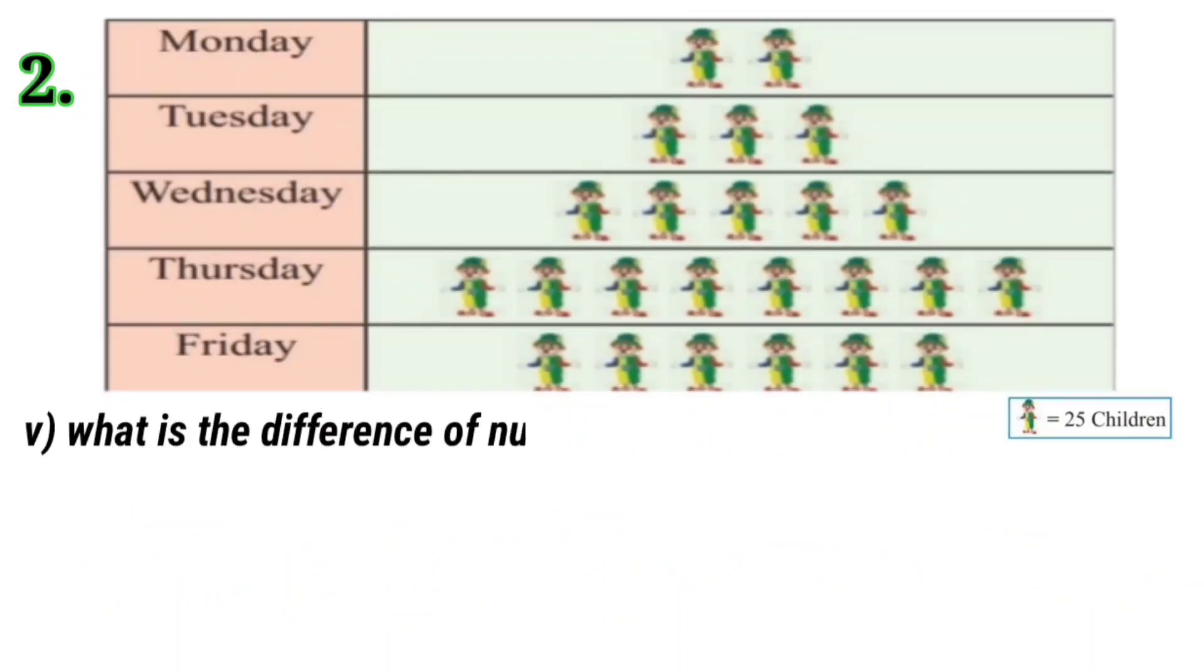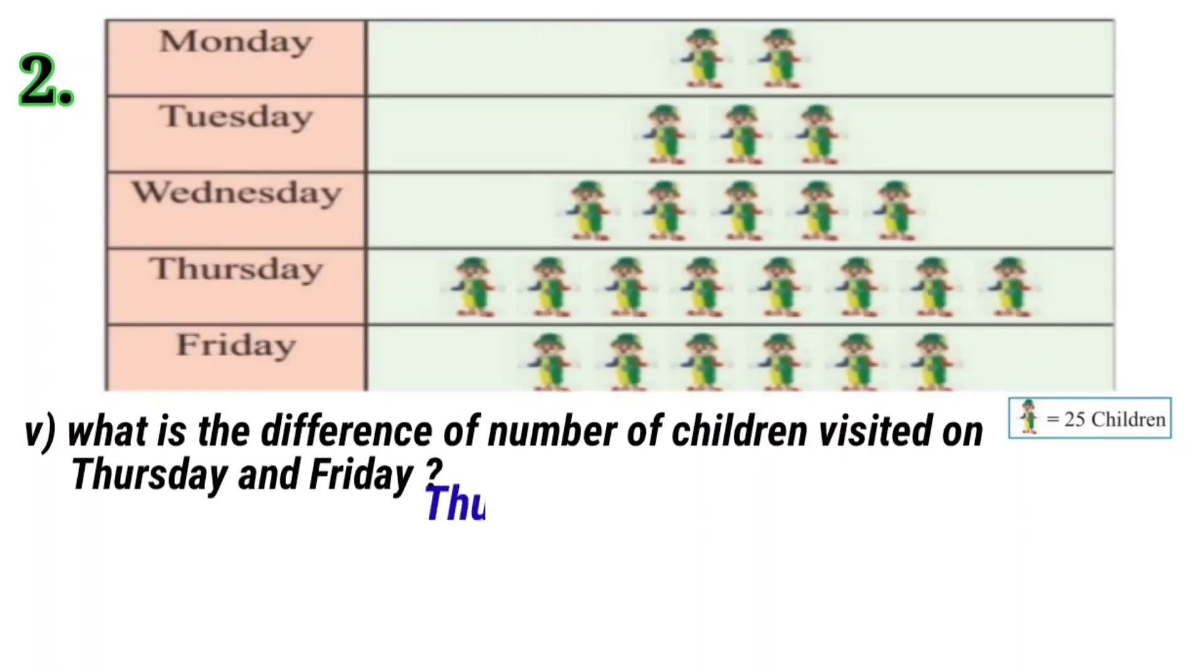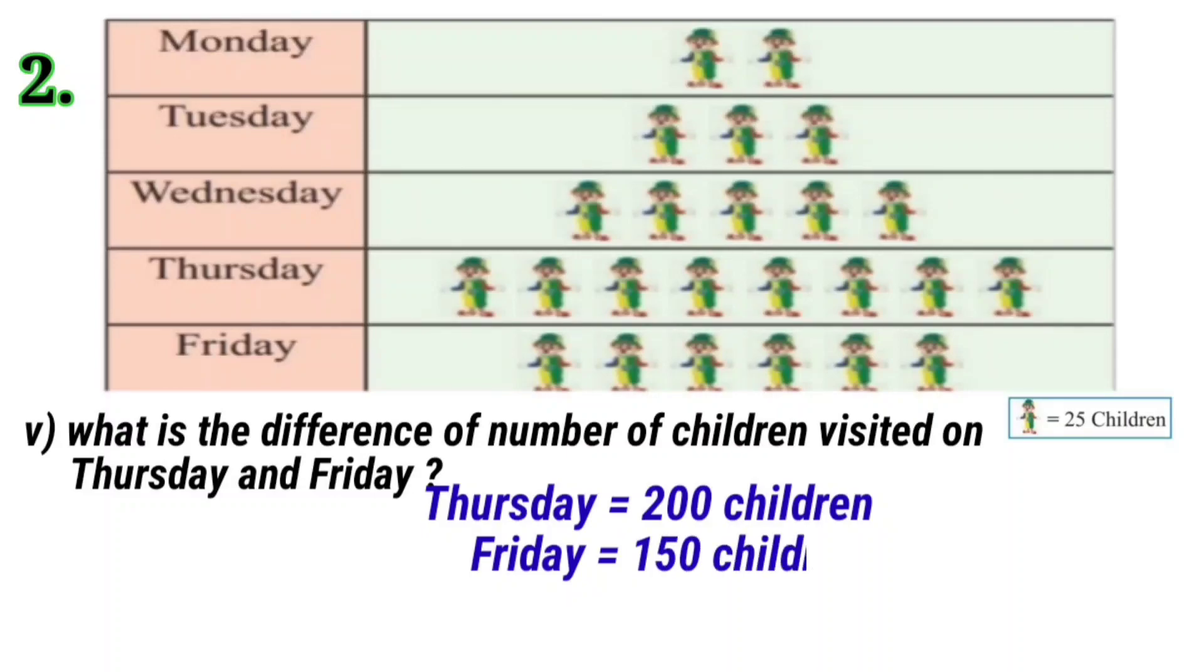Last question is, what is the difference of number of children visited on Thursday and Friday? On Thursday, 200 children visited the circus and on Friday, 6 into 25 that is 150 children visited the circus. Therefore, the difference in number of children is 50 children.